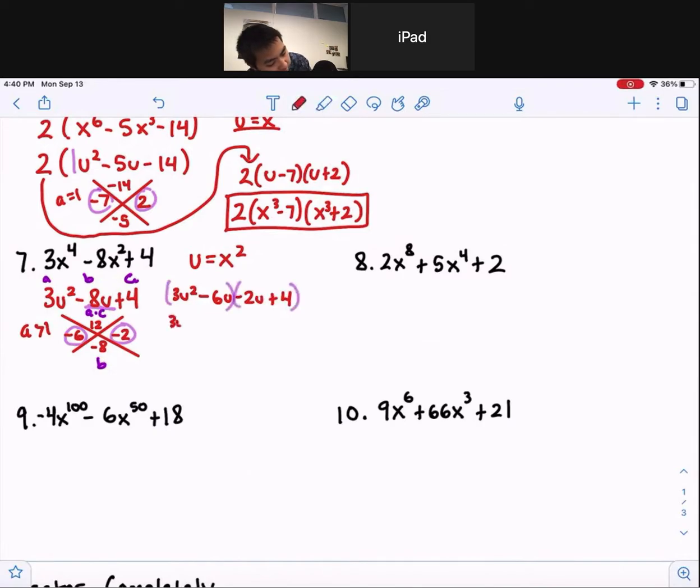Group, factor out a 3u from both to get u minus 2. Factor out a negative 2 from both to get u minus 2. 3u minus 2, u minus 2.